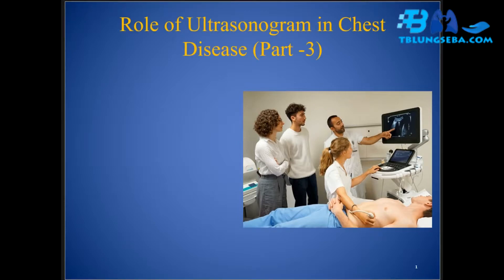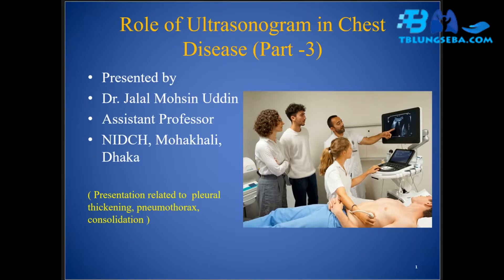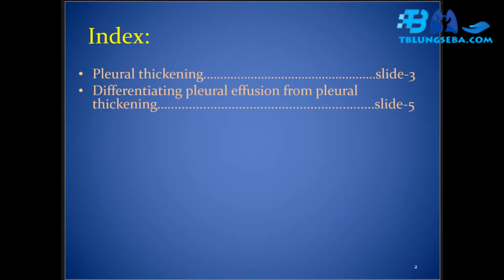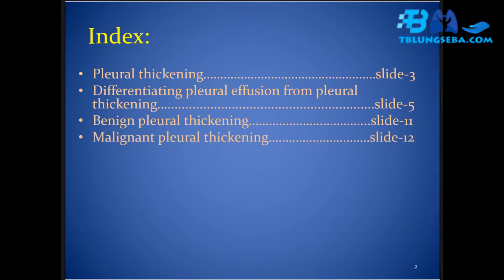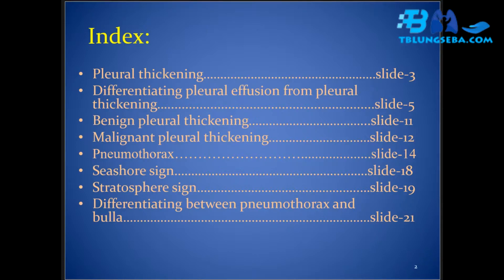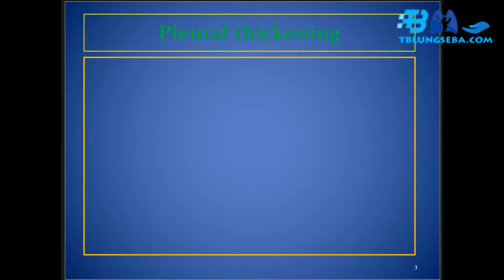Role of ultrasonogram in chest disease, part 3, presented by Dr. Joel Moxin Udin, assistant professor, NIDCH, Mohakhali, Dhaka. This presentation covers pleural thickening, pneumothorax, and consolidation, with key slides on differentiating pleural effusion from pleural thickening, benign and malignant pleural thickening, pneumothorax, seashore sign, stratosphere sign, differentiating pneumothorax from bullous disease, consolidation, and shred sign.